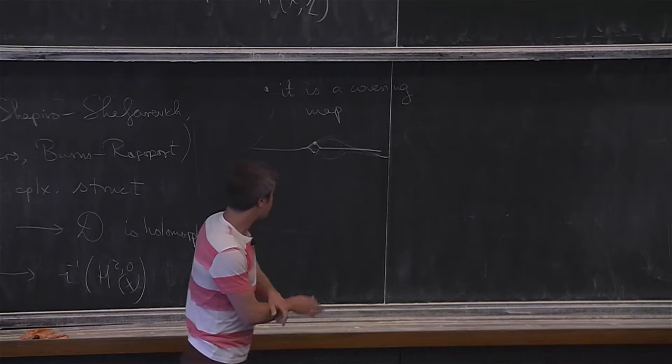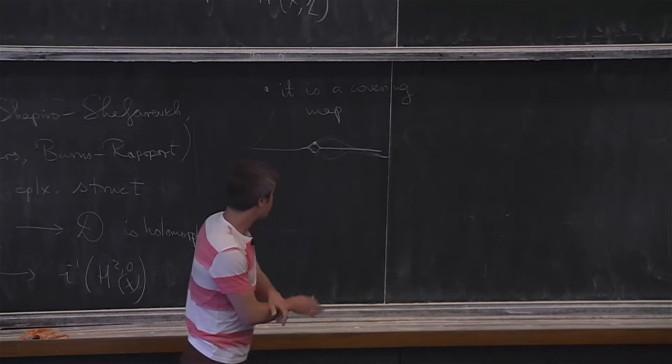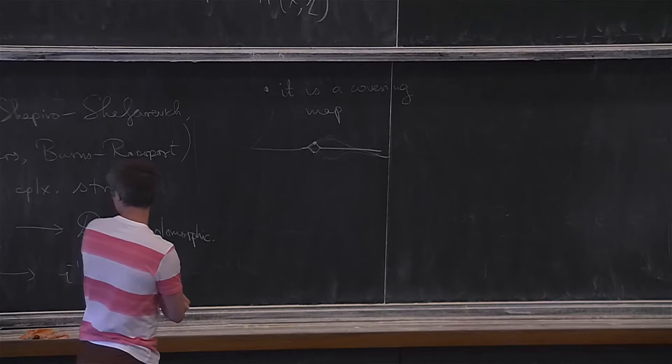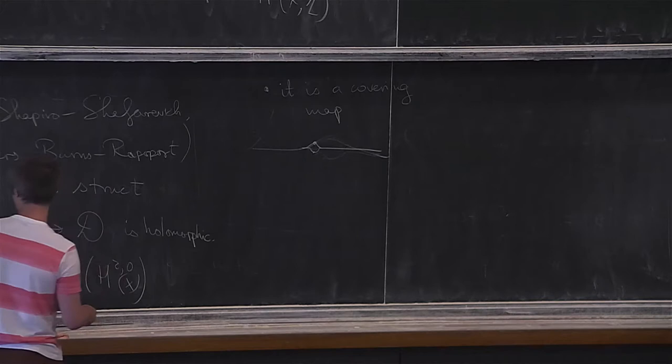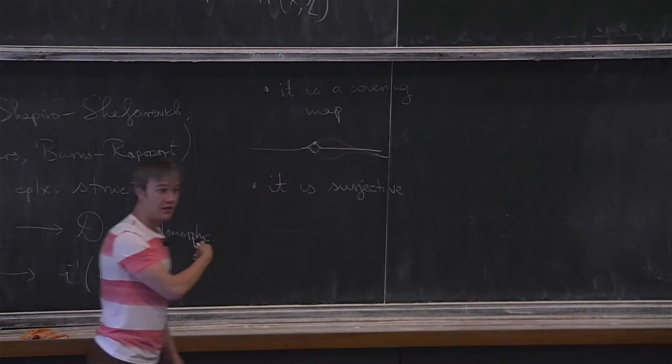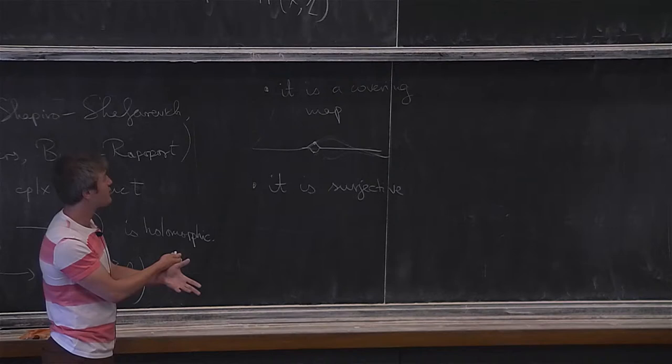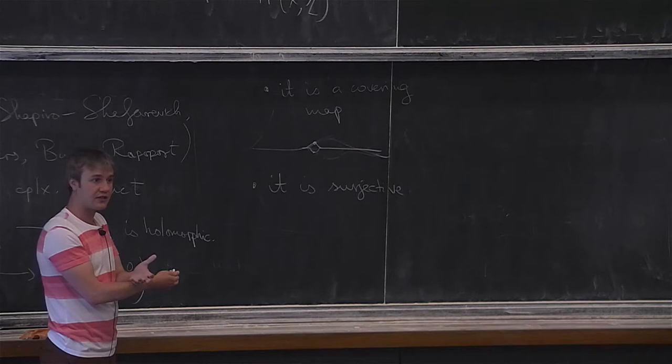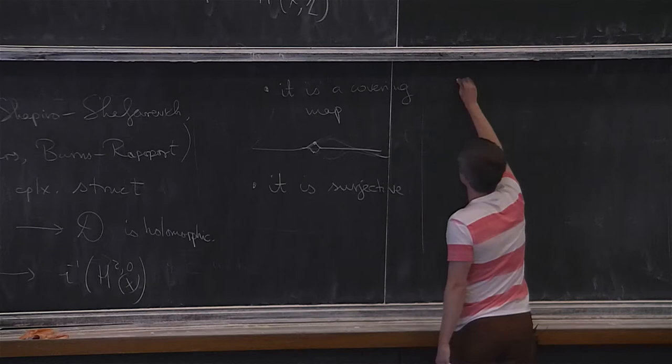Is there a simple example to see the non-Hausdorff behavior? People knew this for a long time in a different form. The map is also surjective, which is an important fact. It says that for any linear algebraic data that you prescribe as a valid Hodge decomposition, there will be a K3 surface realizing it. The example is called flops.